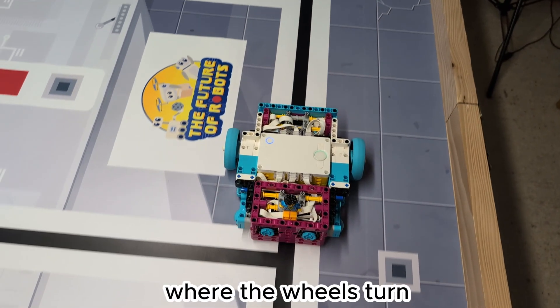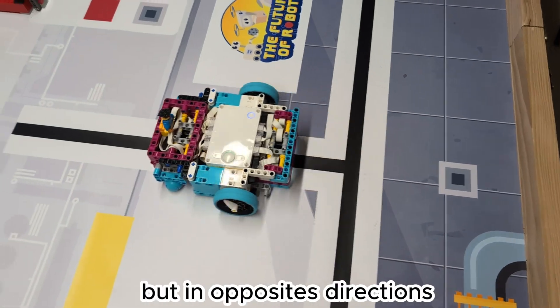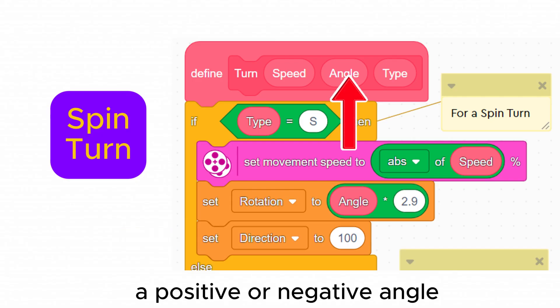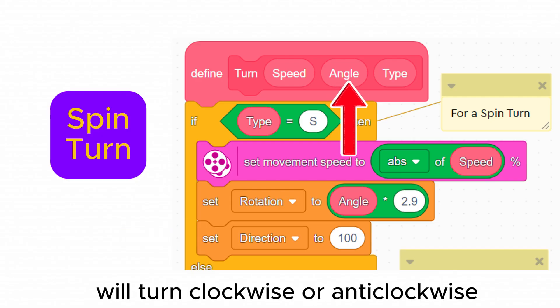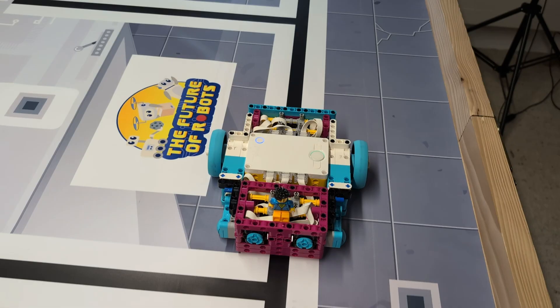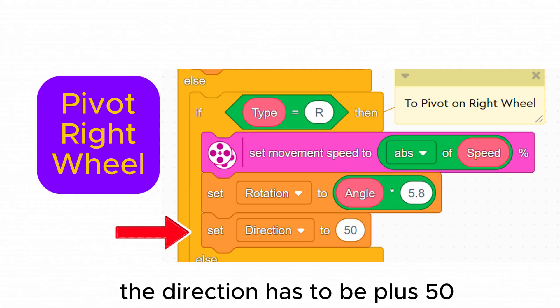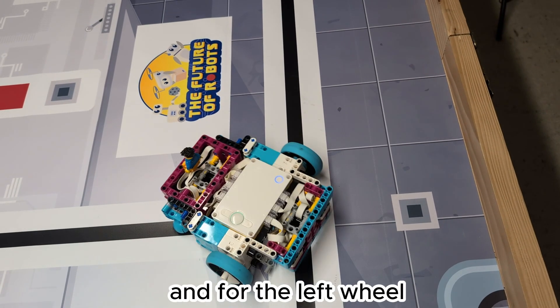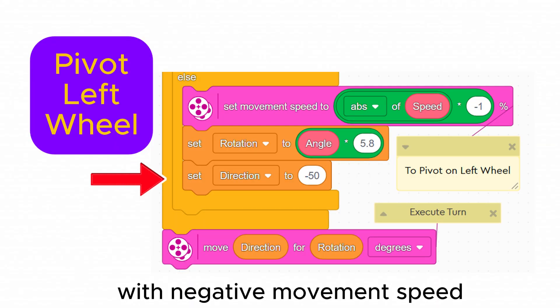For a spin turn where the wheels turn by the same amount but in opposite directions we set the direction to 100. A positive or negative angle will turn clockwise or anti-clockwise by the specified number of degrees. To pivot on the right wheel the direction has to be plus 50 with positive movement speed and for the left wheel minus 50 with negative movement speed.